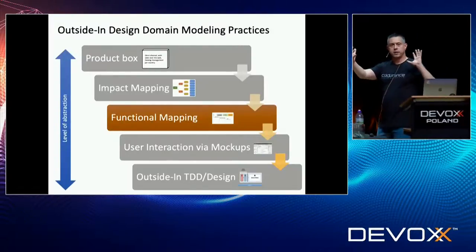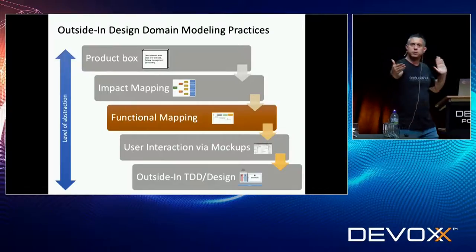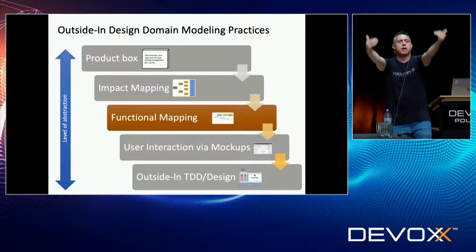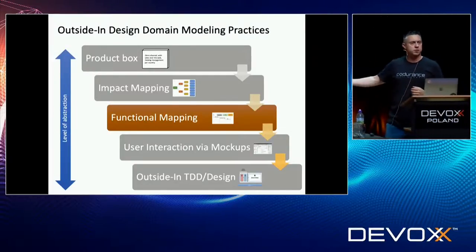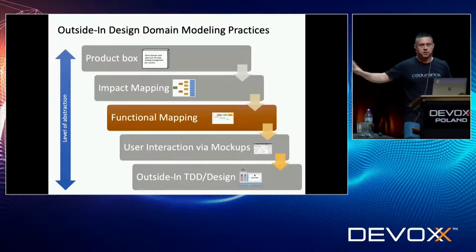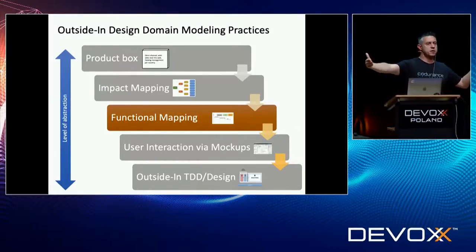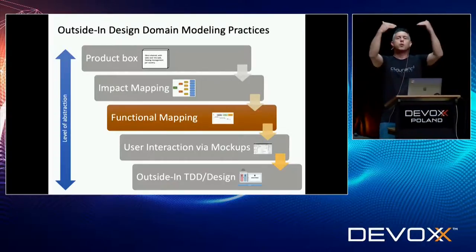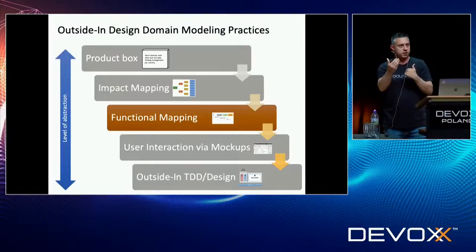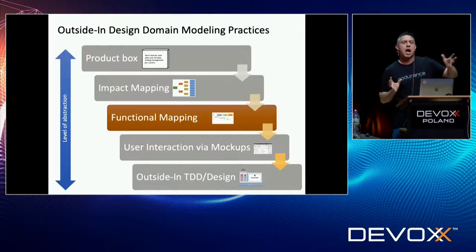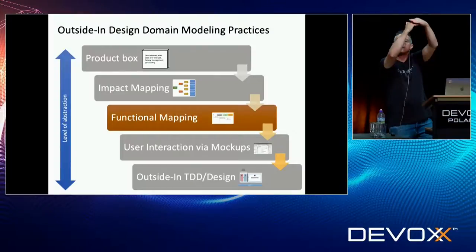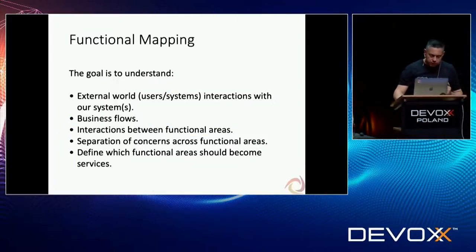Once we have a milestone with a set of features, we need to go one level down. This is not upfront design — these things take just a few hours, not months. Now we have a bunch of features to achieve in the next three months, and we need to go to a lower level of detail. We need to validate what the user journeys will be, both internal and external. As soon as users come into the system, what is the journey and which functional areas will be involved? This is another level of refinement.